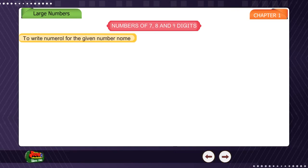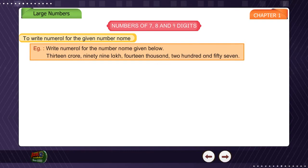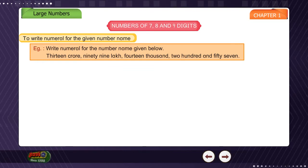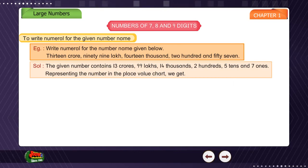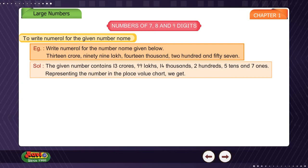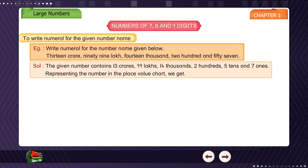To write the numerals for the given number name. Example: write the numeral for the number name given below. 13 crore 99,14,257. Solution: the given number contains 13 crores, 99 lakhs, 14 thousand, 2 hundreds, 5 tens, and 7 ones. Representing the number in the place value chart, we get: